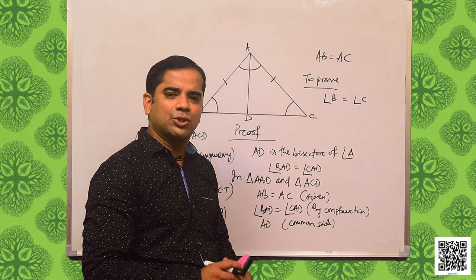Students, is the converse of this theorem true? That is, if two angles of any triangle are equal, can we conclude that the sides opposite to them are also equal? For example, let us do an activity and try to prove this.